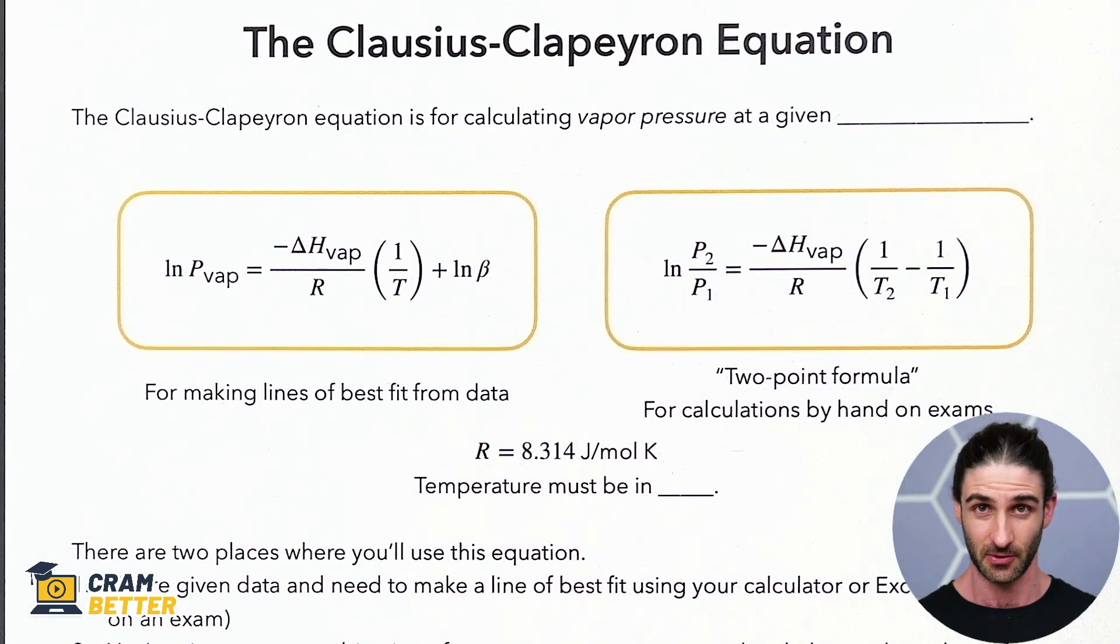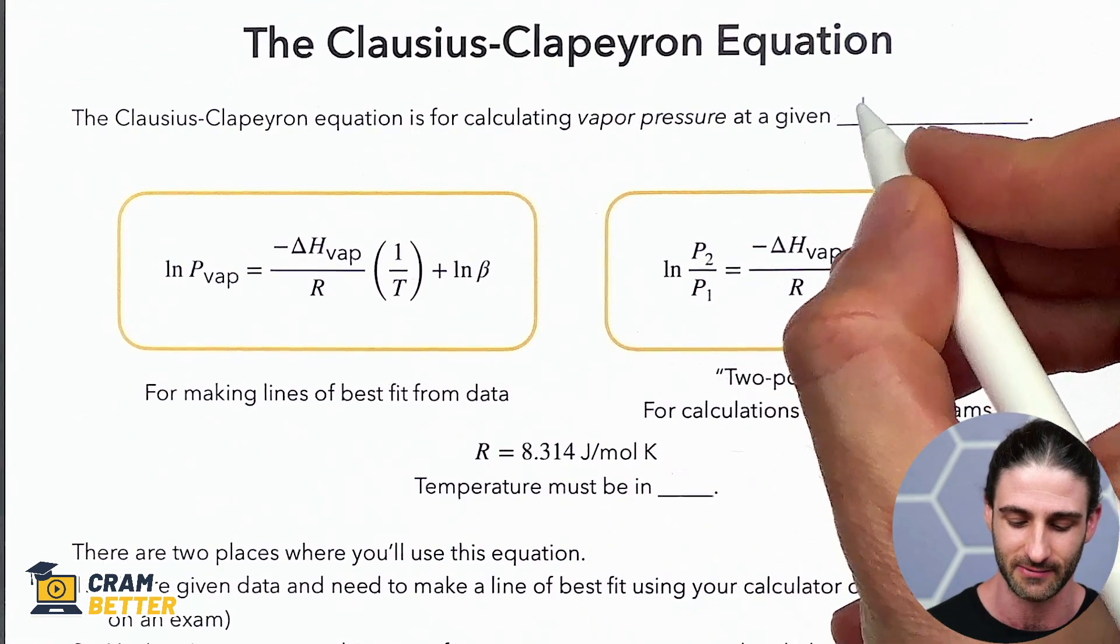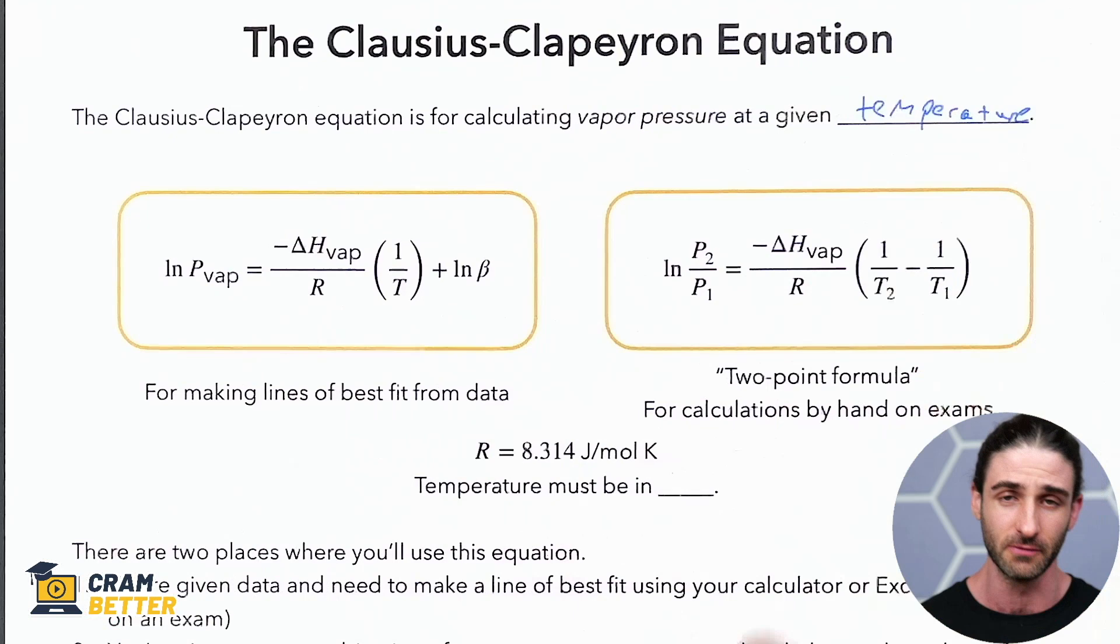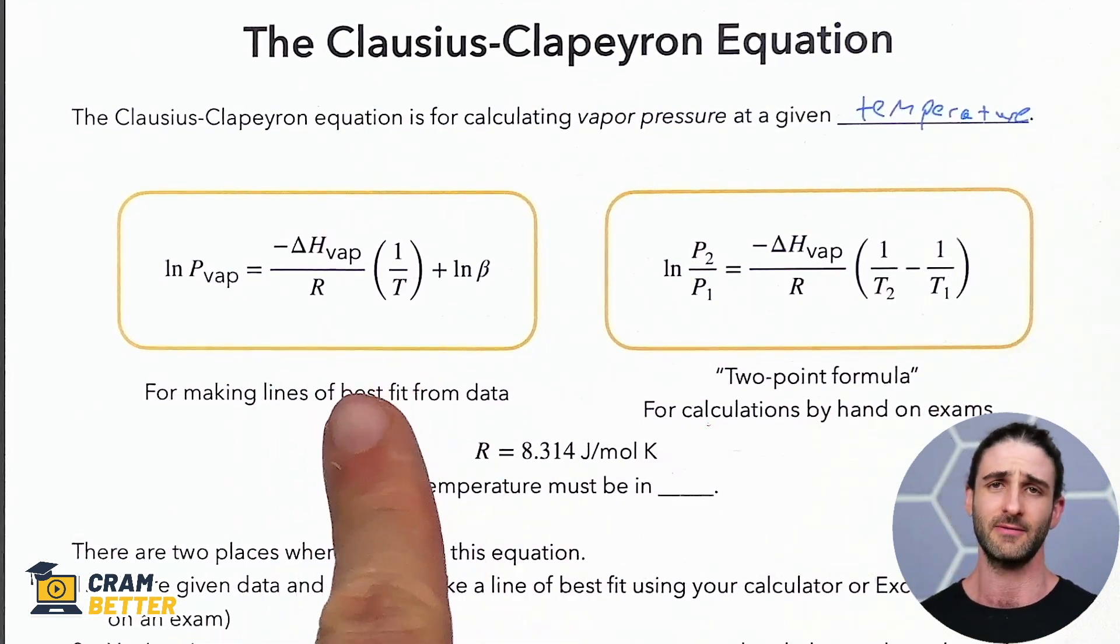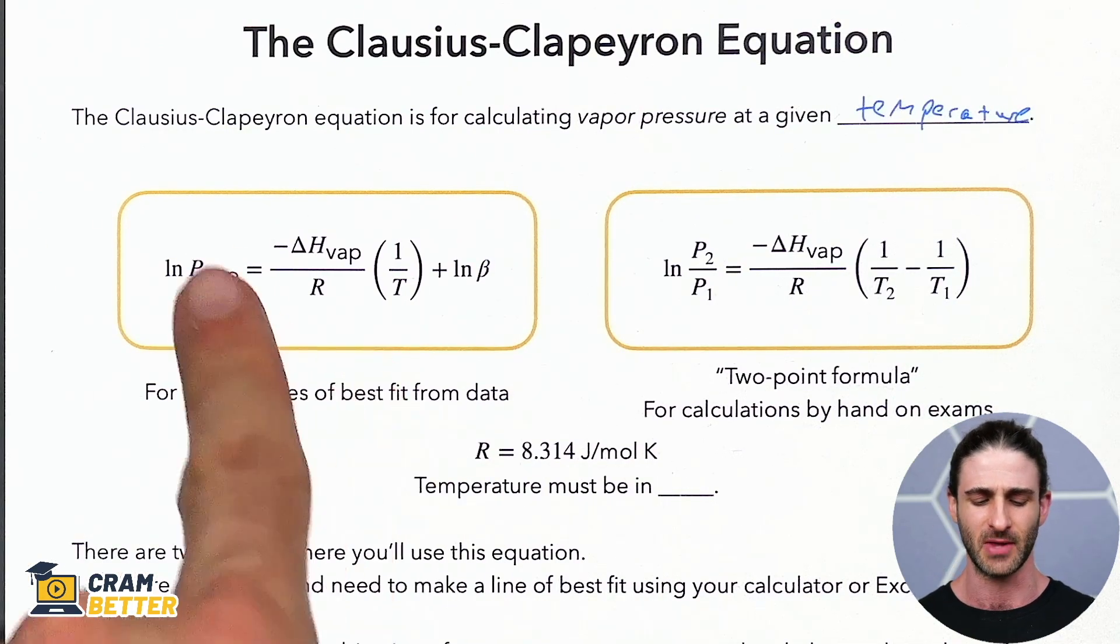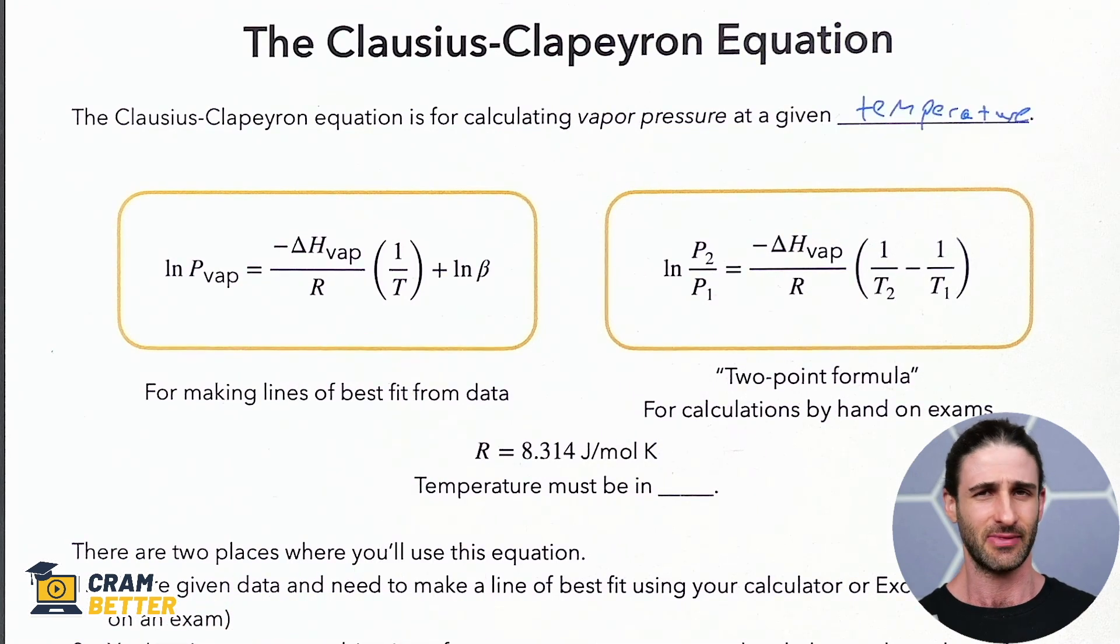Nothing more than that. So, just to reiterate that, we're just trying to find a vapor pressure for a given temperature. Nothing else there. Now, you're actually going to run into two versions of this equation. The one I have here on the left is going to be more for like getting a line of best fit. So, you might see a question, and this is really more of like a homework kind of question where they give you a line of best fit and you use this form of the equation.